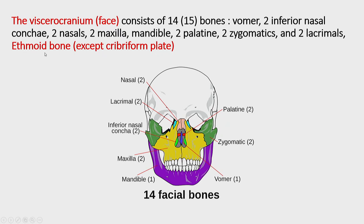The count is 14 or 15 because the ethmoidal bone is partly in both regions: the cribriform plate belongs to the neurocranium, while the perpendicular plate and the labyrinthine part belong to the splanchnocranium. The bones of the splanchnocranium are: vomer, zygomatic bone, palatine bone, nasal bone, lacrimal bone, inferior nasal concha (considered a separate bone), the superior and middle nasal conchae belonging to the ethmoidal bone, maxilla, and mandible. Among these, only the mandible and vomer are unpaired.